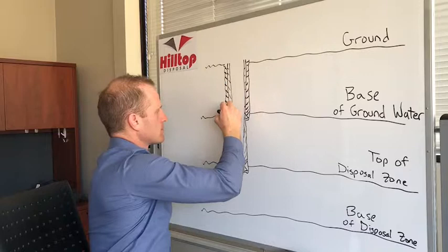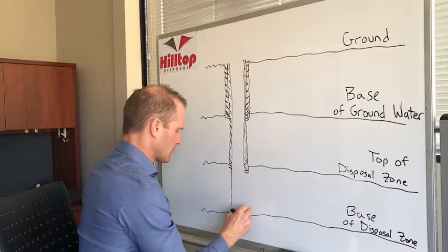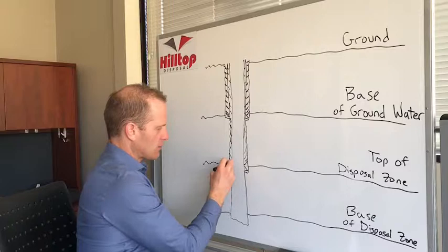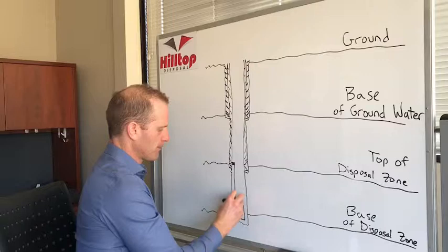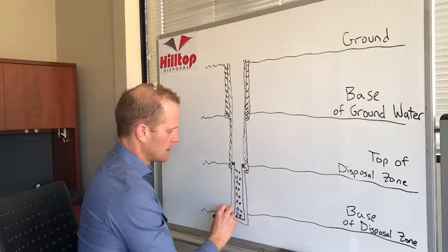And then finally you're going to drill out through your disposal zone. And then once you have this here, you're going to run a liner. Now what a liner is, is a piece of pipe with a liner hanger on top with either holes or slots in it, and that allows you when you're injecting your water to go out into your formation.